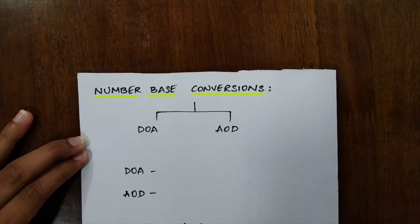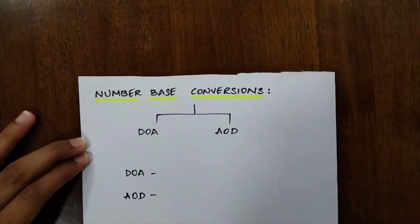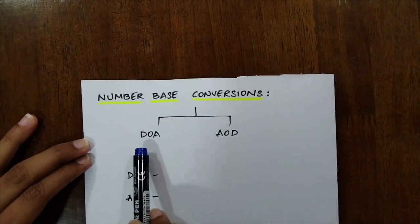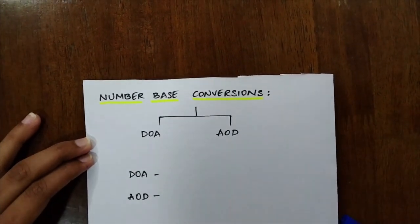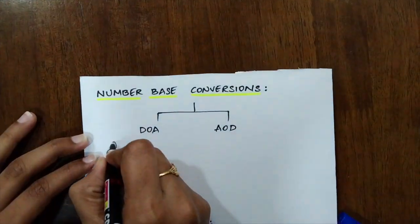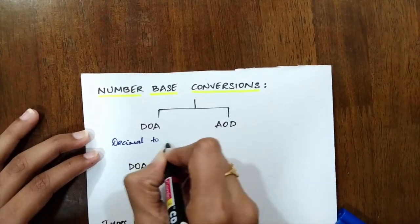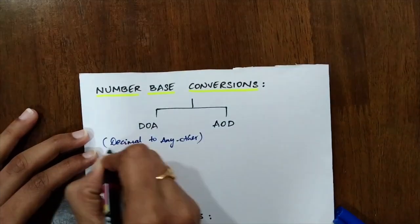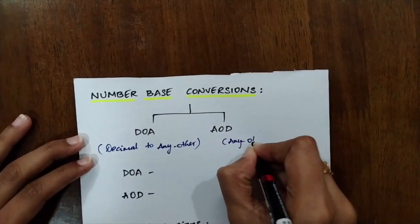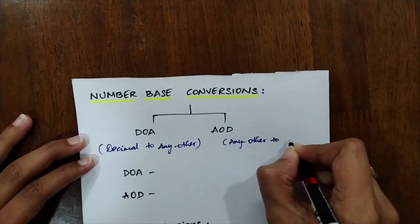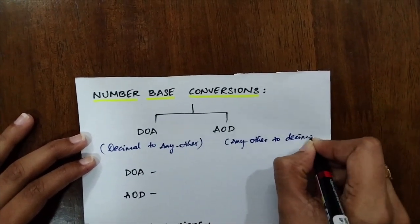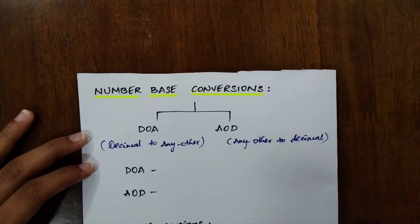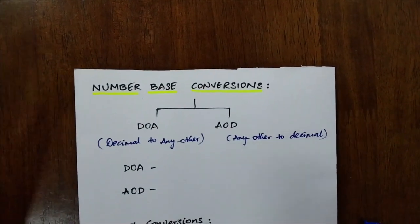Okay, coming to number base conversions. I broadly categorized number base conversions into only two forms which is DOA and AOD. Now what does DOA and AOD stand for? DOA stands for decimal to any other system, and AOD stands for any other to decimal. Now what is actually any other in this notation? Any other can be binary, octal, or hexadecimal. This is the simplest notation you can keep in your mind for doing any of the problems.